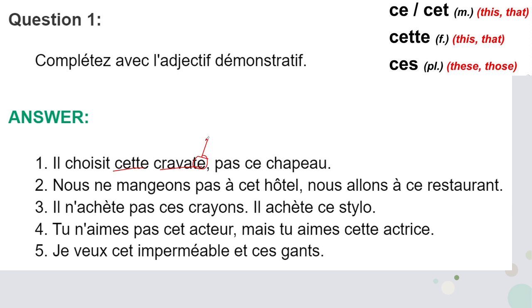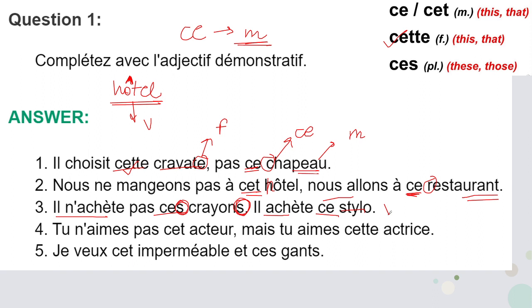'Stylo' — 'ce' is used for masculine, so with masculine we are using 'ce'. Next, 'acteur' — actor is masculine, and there is a vowel here, so 'cet' will be used. And 'actrice' is feminine, so 'cette' will be used. Next, 'Eiffel' — this is masculine with a vowel, as you can see there is an 'i' here, so that's why we are going to use 'cet'.